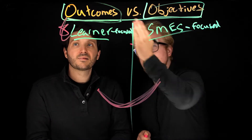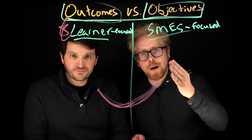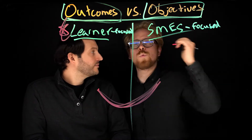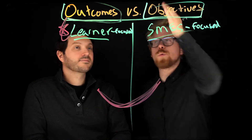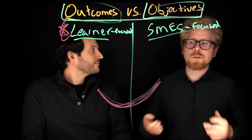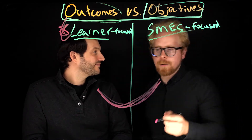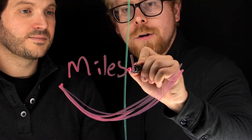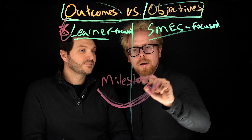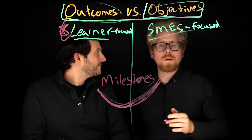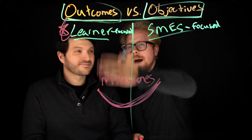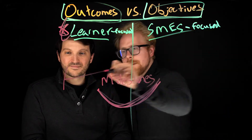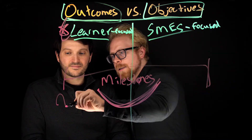So you really want these to match up. They need to sync up from the learner's perspective, so you work backwards. You want to work backwards from the outcome, which is why when we teach about learning objectives, we talk about milestones. When you are building a program, you need to build it based on milestones — milestones are the outcomes that your learners achieve on their journey from A to Z.